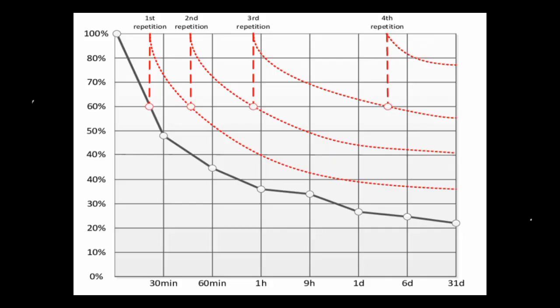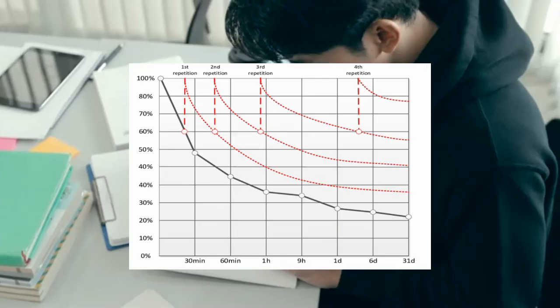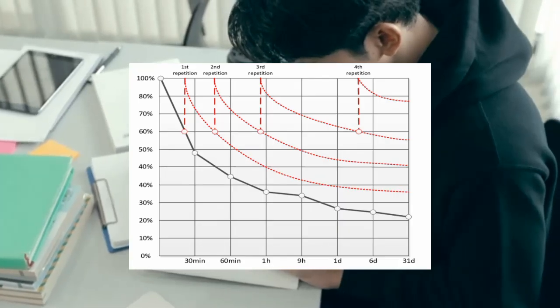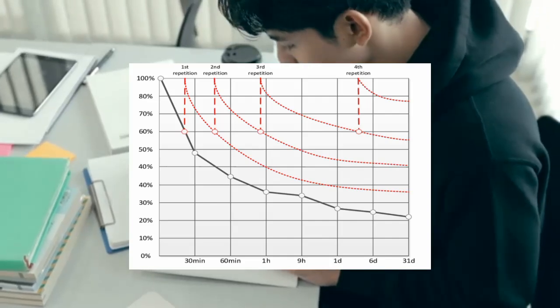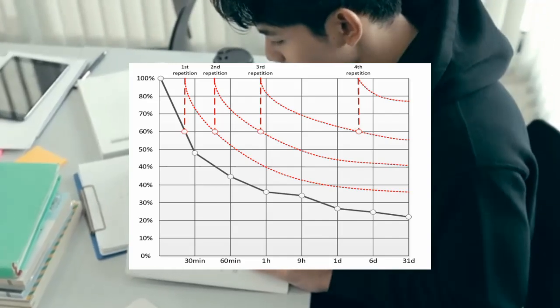Number two, spaced repetition. Ever heard of the forgetting curve? It shows how we forget information over time without reinforcement. Spaced repetition combats this by reviewing material at increasing intervals. For example, revisit key concepts a day after learning, then a week later, and so on. This reinforces memory and moves information from short-term to long-term storage.